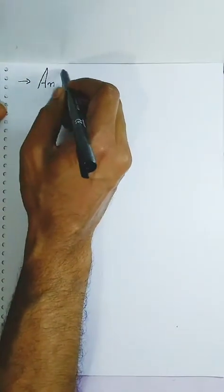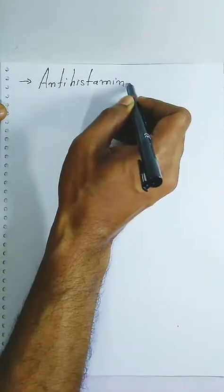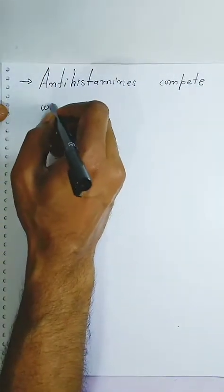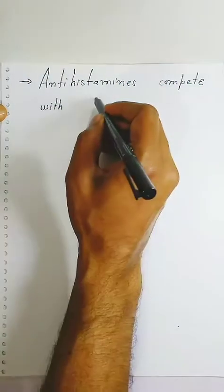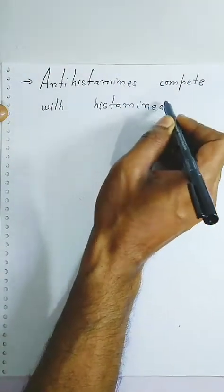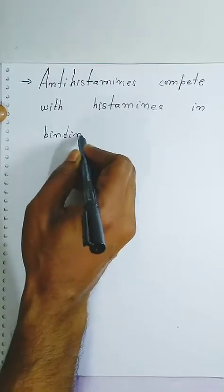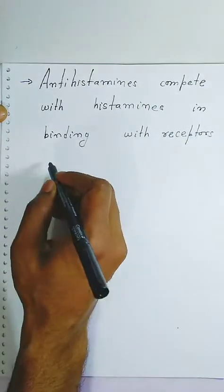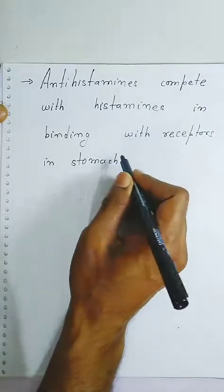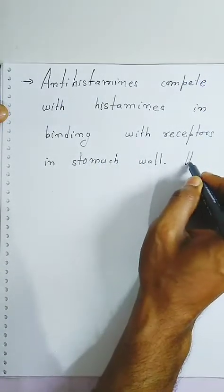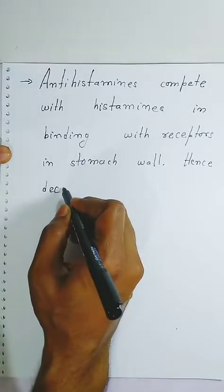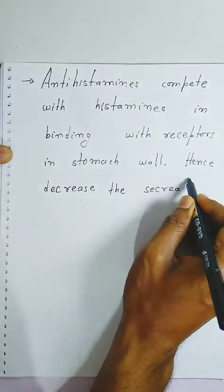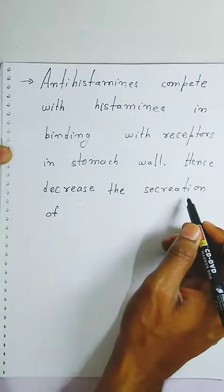What is the function of anti-histamines? Anti-histamines compete with histamines in the binding with the receptors which are present in the stomach wall. Hence they decrease the secretion of HCl — this means a less amount of HCl will be generated in our stomach.